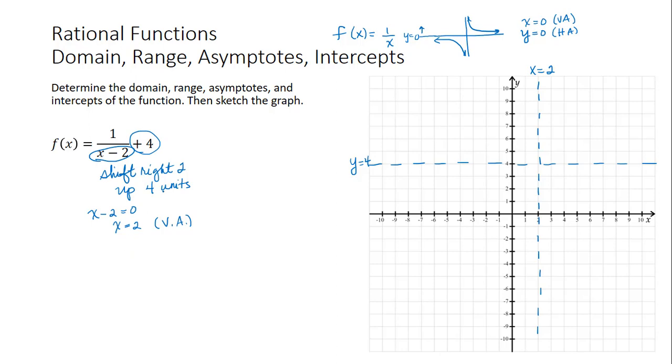So then we need to think about some specific points to get on the graph. So we can find our intercepts. So if we find f of 0 to find our y-intercept, that's 1 divided by 0 minus 2 plus 4, which is negative 1 half plus 4 or 3 and a half. So at 0, 3.5 is our y-intercept.